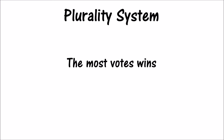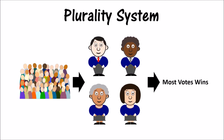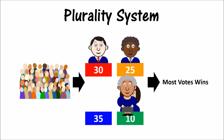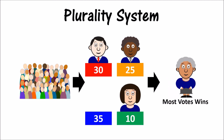A plurality system is one in which the candidate with the most votes wins. For example, if there are four candidates in an election and one candidate gets 10 votes, one gets 25, one gets 30, and one gets 35, the candidate with 35 votes has the most and is therefore the winner. The exact percentage of votes doesn't matter — the most votes wins.